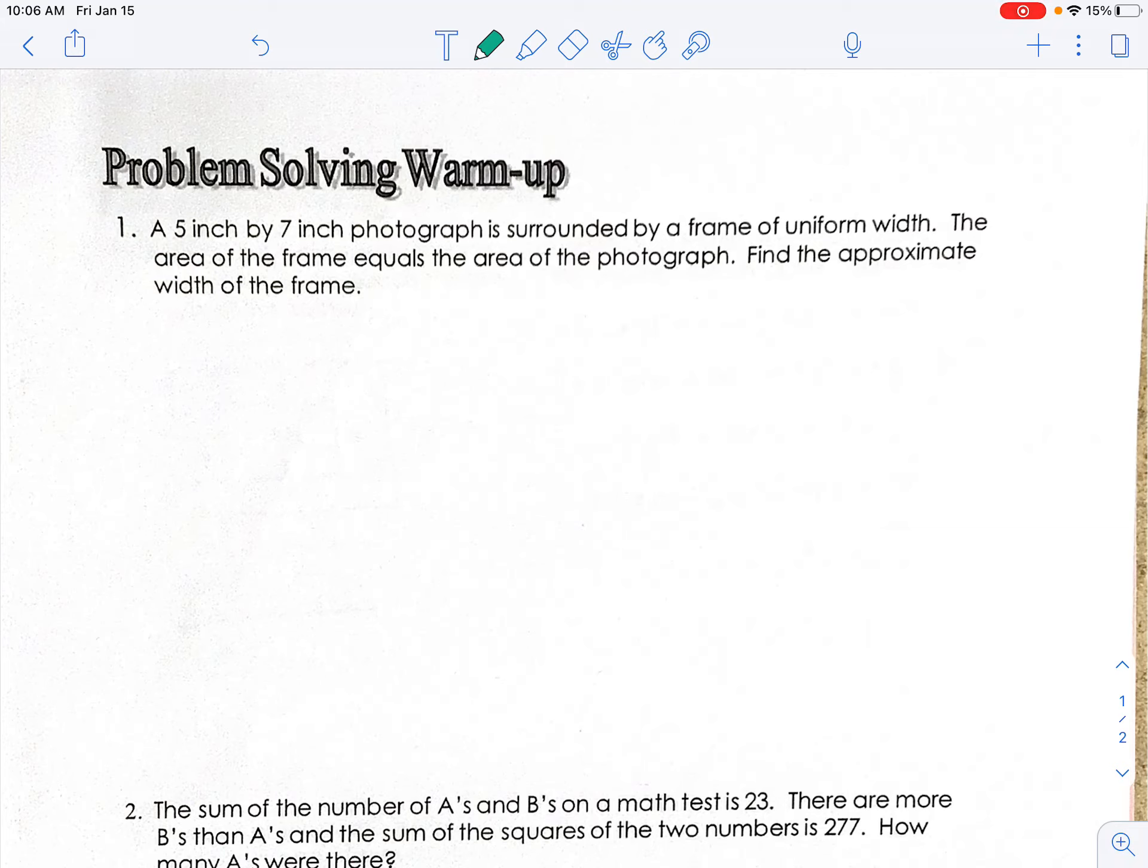So our first problem here says a 5 inch by 7 inch photograph is surrounded by a frame of uniform width. The area of the frame equals the area of the photograph. Find the approximate width of the frame. It's got a lot going on here. So first off, it says a 5 by 7 photograph, so I'm going to draw my 5 by 7 photograph.